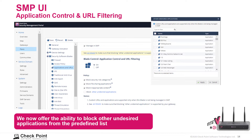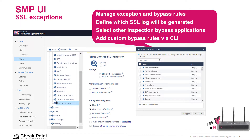URL filtering can be deployed over the entire environment. For SSL exceptions, we can manage exceptions and bypass rules on a global level for all gateways. We can manage exceptions and bypass rules, define which SSL logs will be generated, select inspection bypass applications, and add custom bypass rules via CLI.